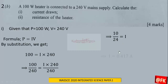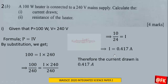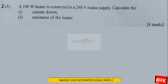This implies that the current is equal to 0.417 amps. Now let's consider part II of the question, where we are to find the resistance of the heater.